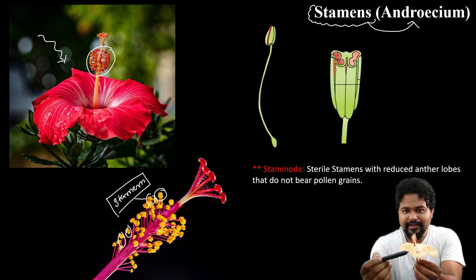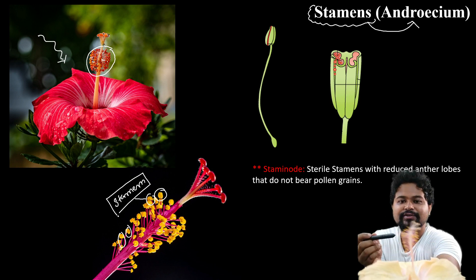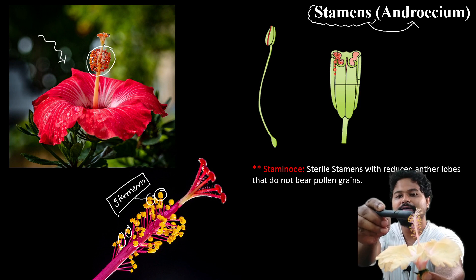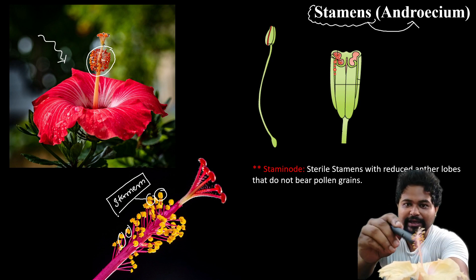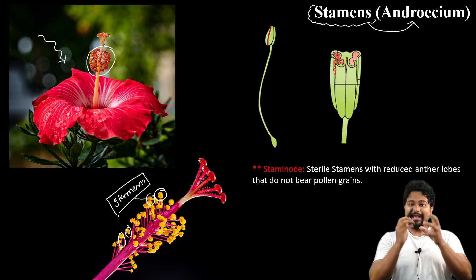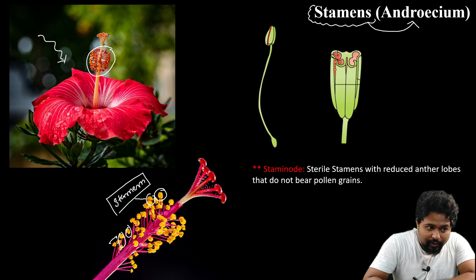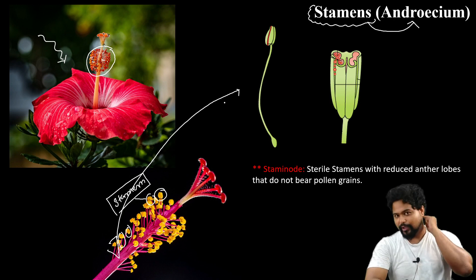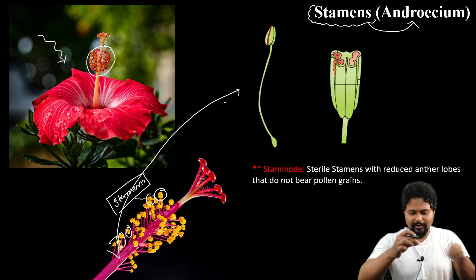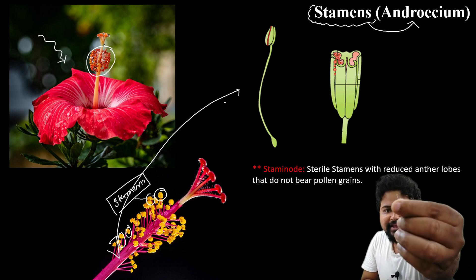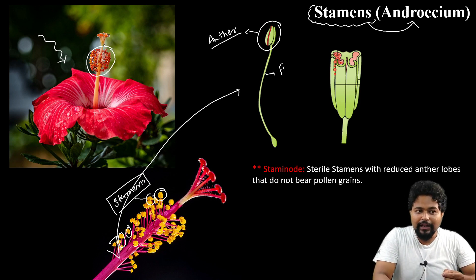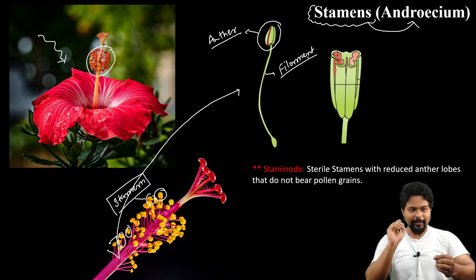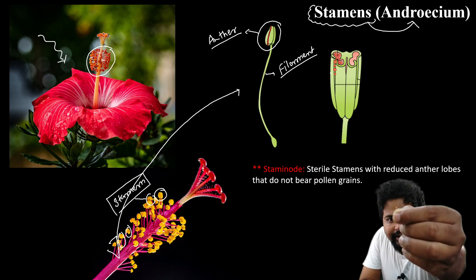You have already seen it — these are the stamens. This is the stamen, and this is the anther and the filament.